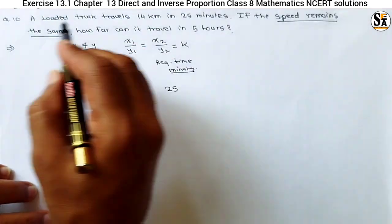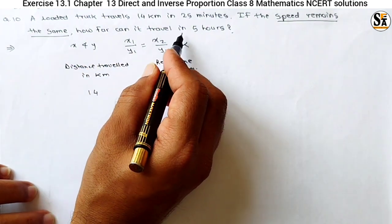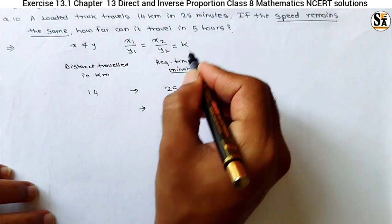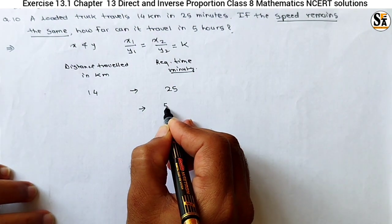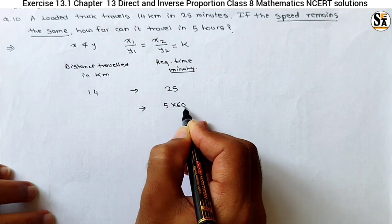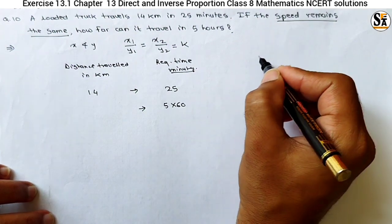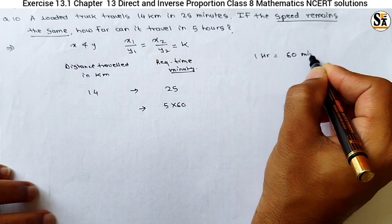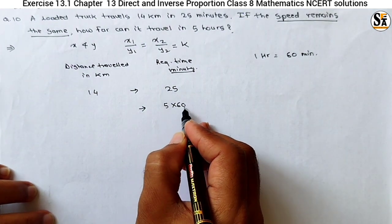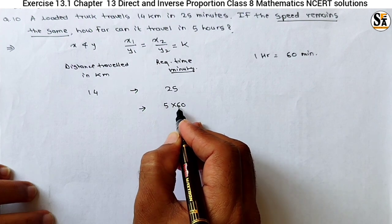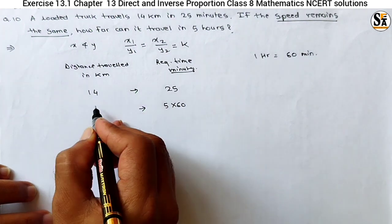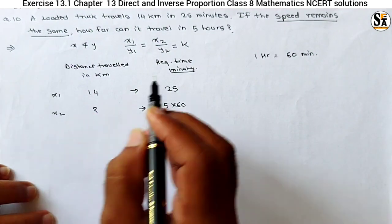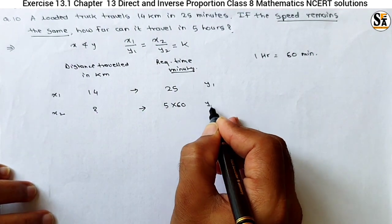What is asked? If speed remains constant, how far can it travel in 5 hours? The time is given in hours, so to convert to minutes we multiply by 60: 5 into 60, because 1 hour equals 60 minutes. So y2 is 5 into 60 minutes, and we have to calculate the distance traveled x2. We have considered distance as x and time as y.